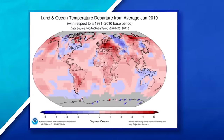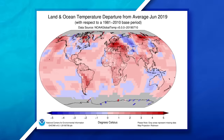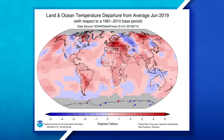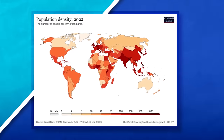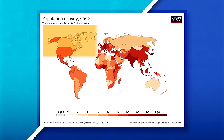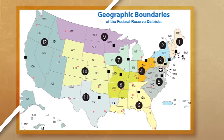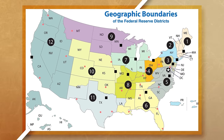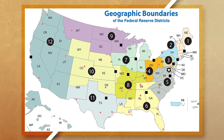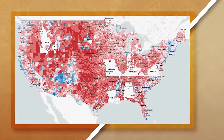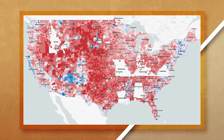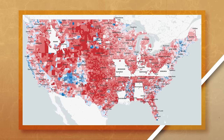A global scale of analysis does not use countries' boundaries to present information — it shows global patterns not connected to any one country. A national scale of analysis has data organized by country. A regional scale of analysis can be displayed in a variety of ways; for example, data organized into different Federal Reserve districts makes it a regional scale of analysis. A local scale of analysis organizes information by the different counties in the United States.